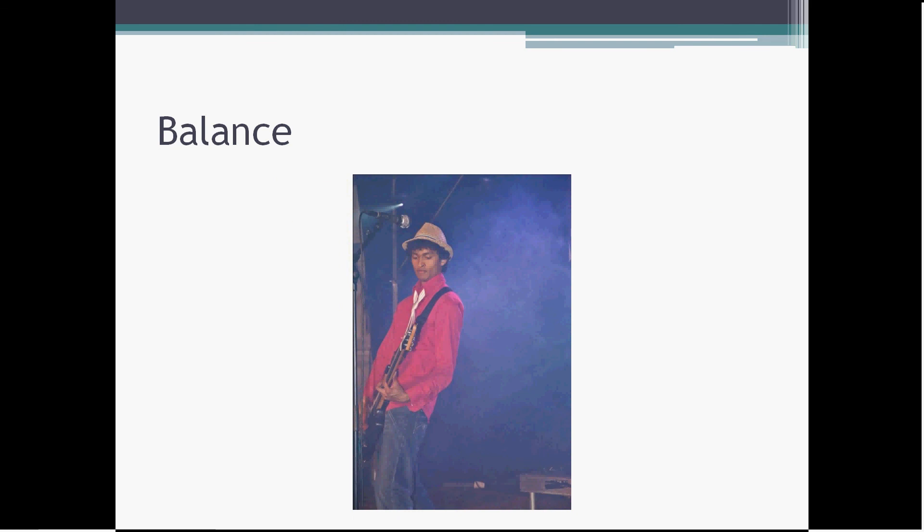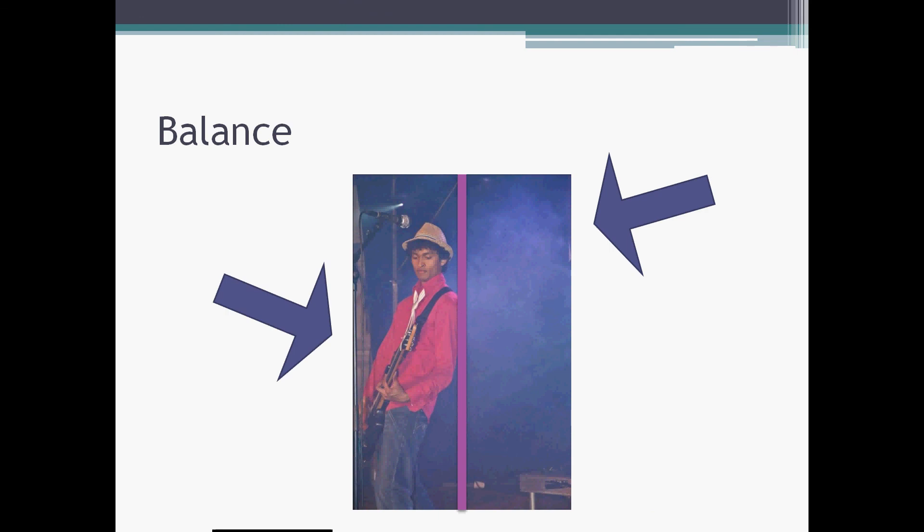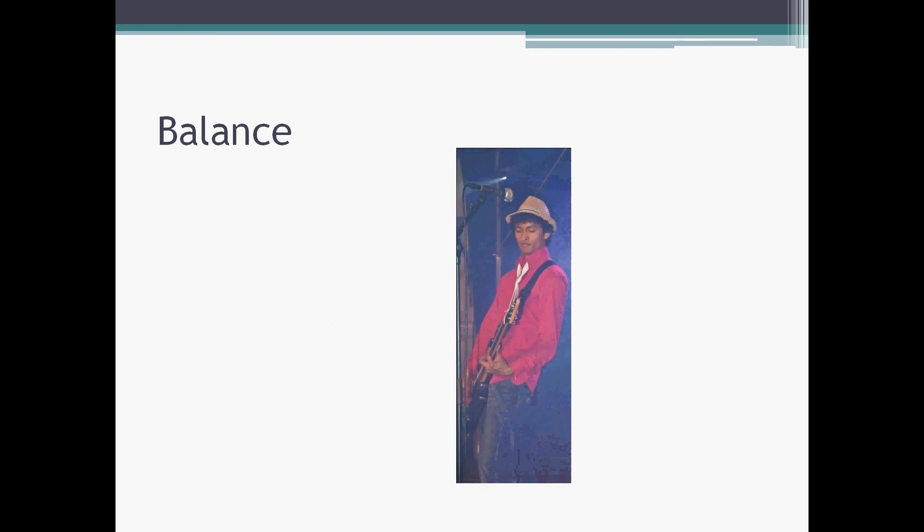The other issue in composition is balance. We want to have a picture that the viewer looks at the entire picture. Not one corner of the picture be interesting and there would be no interesting point in the rest of the picture. For example, in this picture, the viewer looks at the left side of the picture and the right part is empty. So we can say that the left part is heavier, and the picture is not in balance.